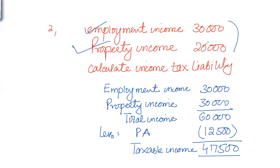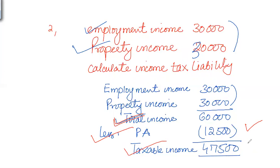The two incomes combined together give £60,000. So we have a total income of £60,000 and as it is less than £100,000, personal allowance is 100% available. Deducting £12,500, we have taxable income of £47,500. But the basic rate band is only £37,500, so the income falls in the higher rate tax band.